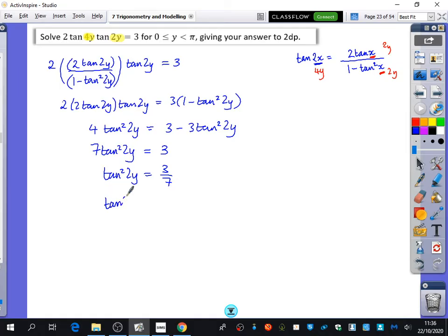So that tan squared 2y is 3 over 7. And then I'm going to square root. When I square root, I need to be careful to plus or minus. So I've got plus or minus root 3 over root 7. And if you notice in the question, it wanted the values for y to be between 0 and pi. But our equation is now with 2y. What do we do with the range? Double it. So I'm going to check for 2y. It's going to be between 0 and 2 pi.